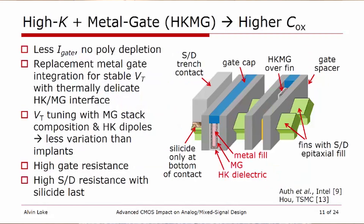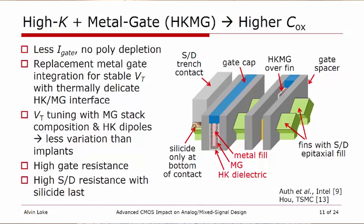Another technique for scaling transistors is the use of high-K and metal gate dielectrics for higher oxide capacitance. The goal is to reduce direct gate tunneling leakage and mitigate poly depletion. A replacement metal gate integration scheme is used for stable V_T, because the high-K metal gate interface is thermally very delicate. This has resulted in tuning transistor V_Ts using metal gate stack compositions and high-K dielectric dipoles, which — unlike implants — allow device variation to be considerably lower. However, because the gates are very narrow, gate resistance is very high, and due to silicide-last integration requirements, the source-drain resistance is also higher.